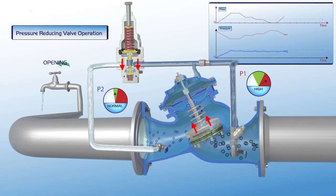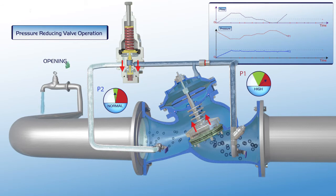On the chart showing increased flow, upstream pressure drops, while P2 downstream pressure remains in its green zone at set point level.